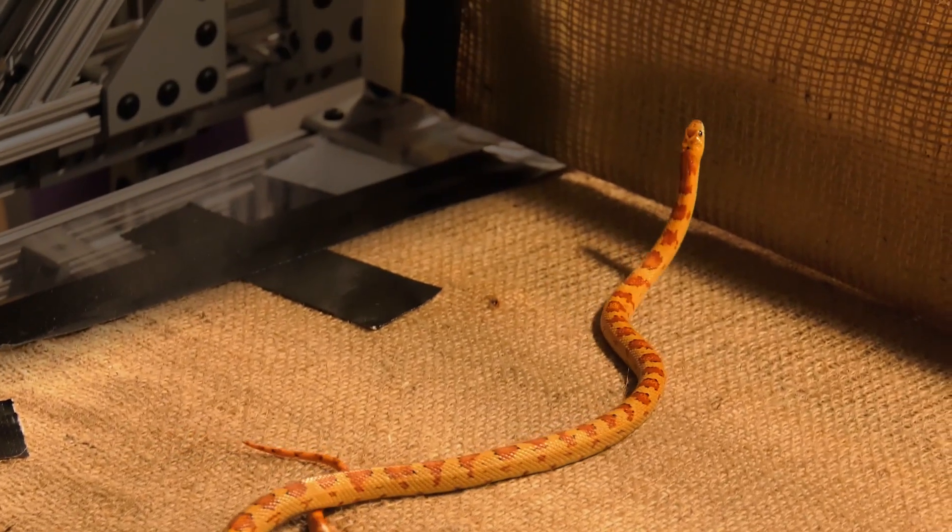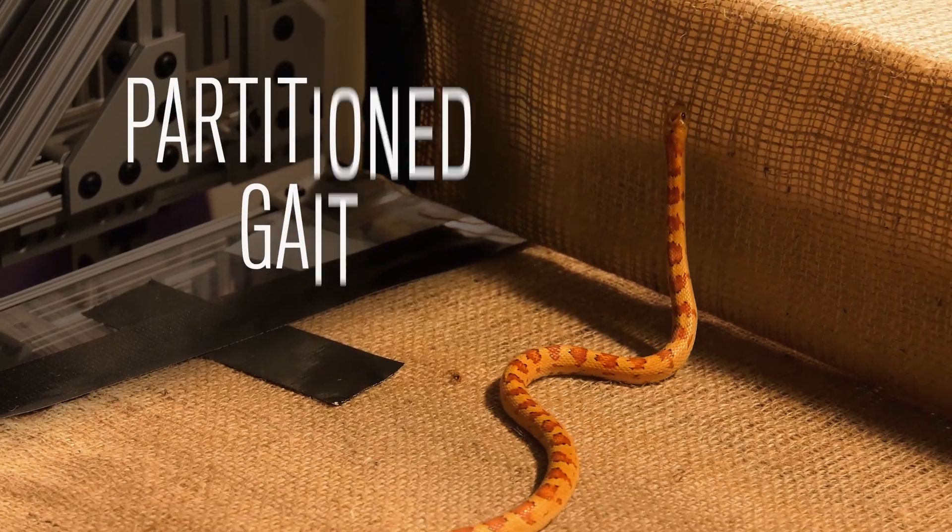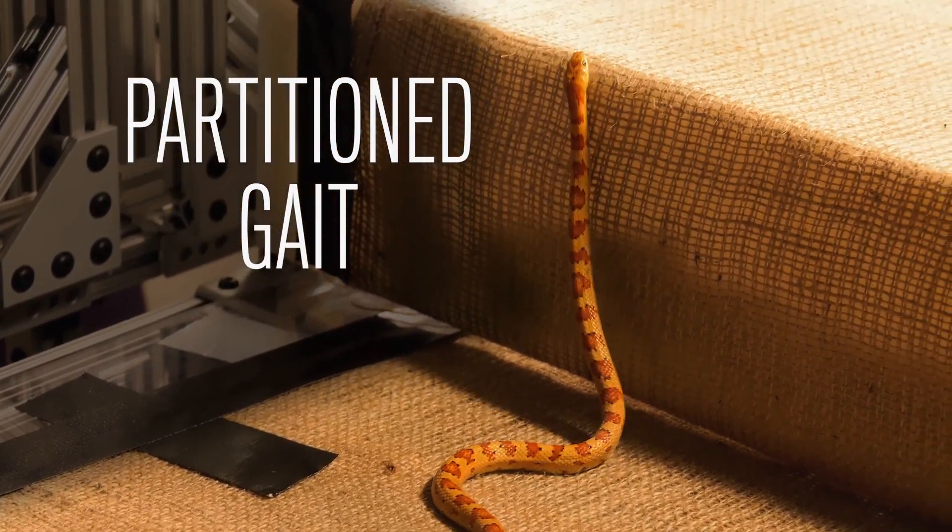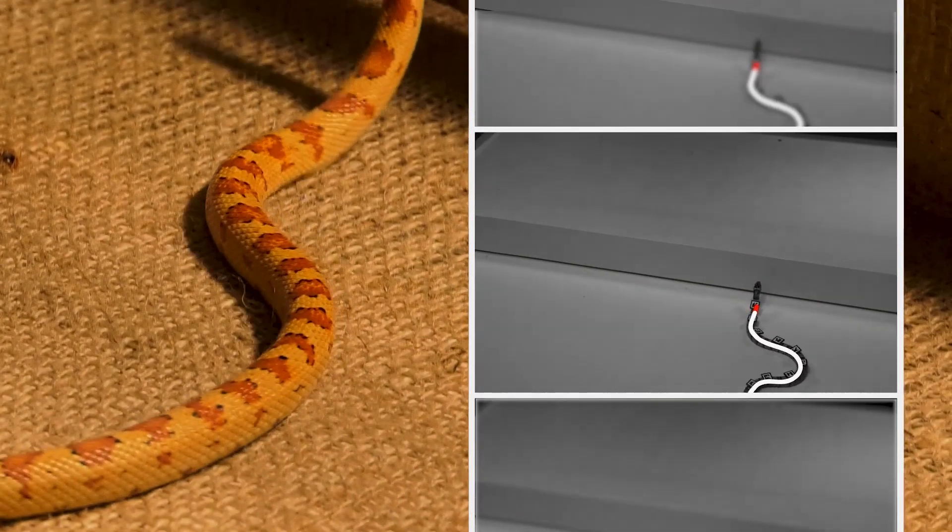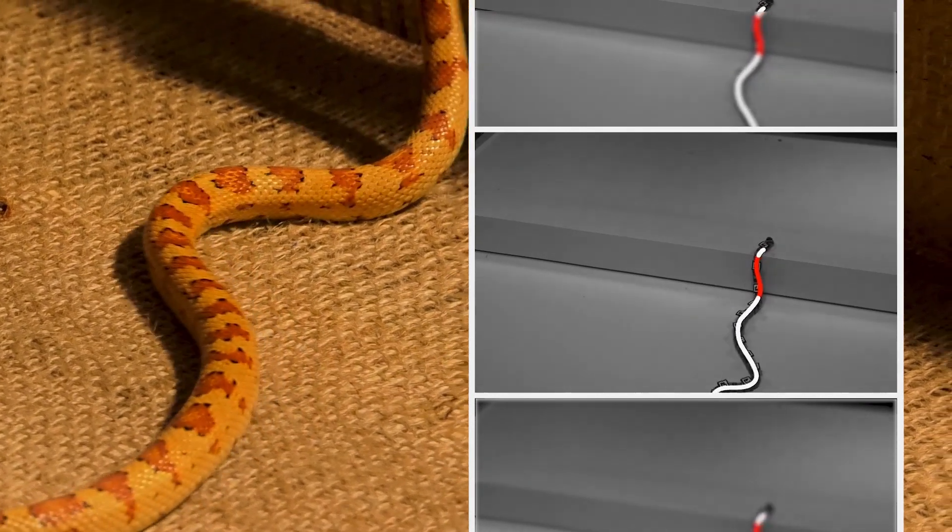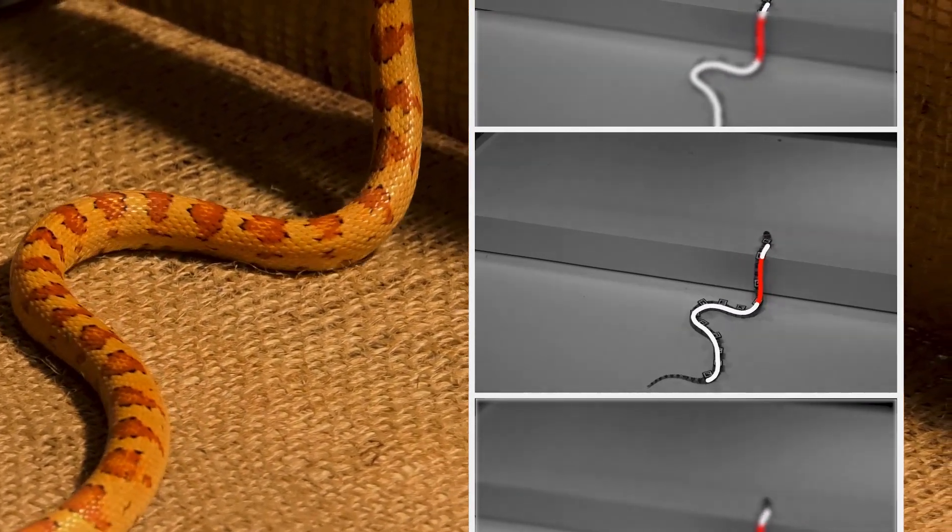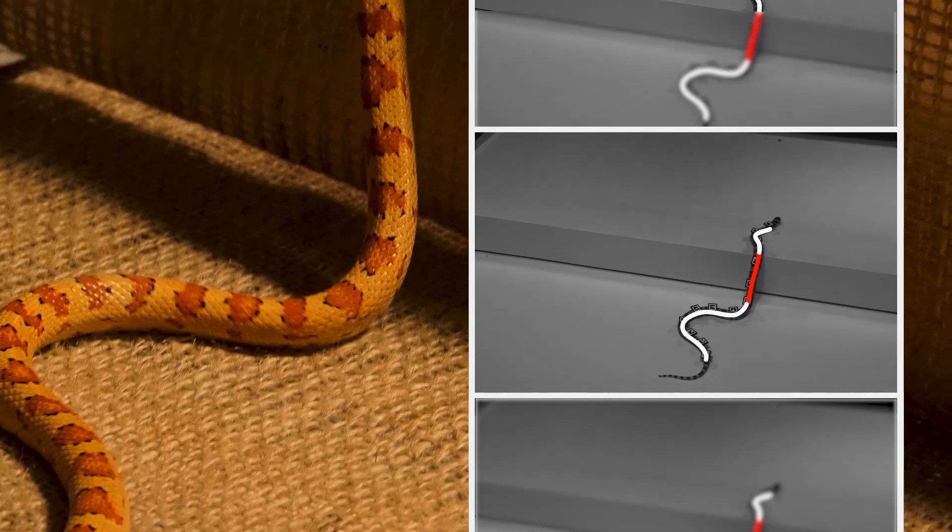We found that the snake uses what we call a partition gate, which people haven't described before. The snake will use the front and the rear part of the body to undulate laterally, both above and below the step like a wave.